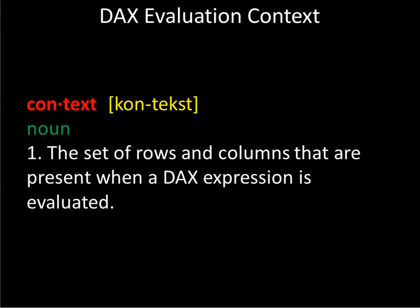To implement calculations well, we need to first really understand evaluation contexts. Our context is the set of rows and columns that are present when an expression is evaluated. If we have a calculation like sum or average, we're summing whatever is available at the moment. So if that sum is in a cell within an Excel spreadsheet, that cell is the intersection of some rows and columns affected by filters and various other components. We'll talk about how that final context is determined before we move too deeply into calculations.